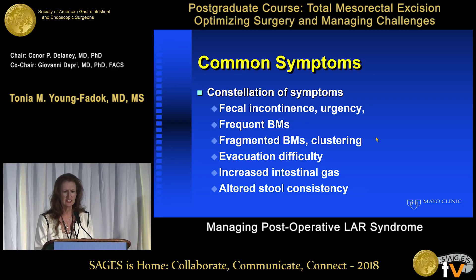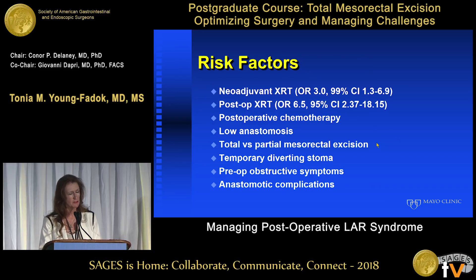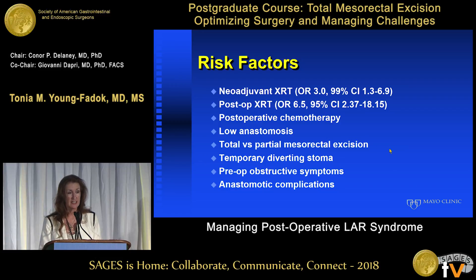It presents with a constellation of symptoms including incontinence, urgency, frequency, fragmentation and clustering of bowel movements, difficulty with evacuation, excessive gas, and altered stool consistency. Risk factors include neoadjuvant chemoradiation, post-op radiation, chemotherapy due to diarrhea, very low anastomosis, total versus partial mesorectal excision, temporary diverting stoma resulting in atrophy, pre-op pelvic floor dysfunction, and anastomotic complications.